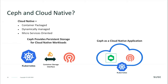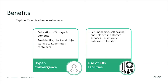Cloud-native is container-packaged, dynamically managed, and microservices-oriented. With the combination of Kubernetes and Ceph, we can provide persistent storage for cloud-native workloads. There are great benefits here: we can co-locate our storage and compute infrastructure together, providing file, block, and object storage to a Kubernetes cluster. Self-managing, self-scaling, self-healing — all of these services in a cloud-native environment become very practical cases when you're managing the cloud-native environment.